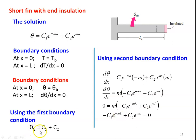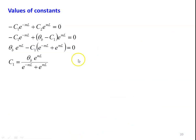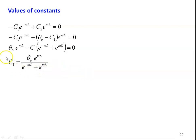We now have two equations: theta b equal to C1 plus C2, and minus C1 e to the power of minus ml plus C2 e to the power of ml equal to 0. Solving the two equations to find C1 and C2: substituting C2 from the first condition into the second gives C1 equal to theta b e to the power of ml divided by e to the power of minus ml plus e to the power of ml. And C2 equal to theta b e to the power of minus ml divided by e to the power of minus ml plus e to the power of ml.